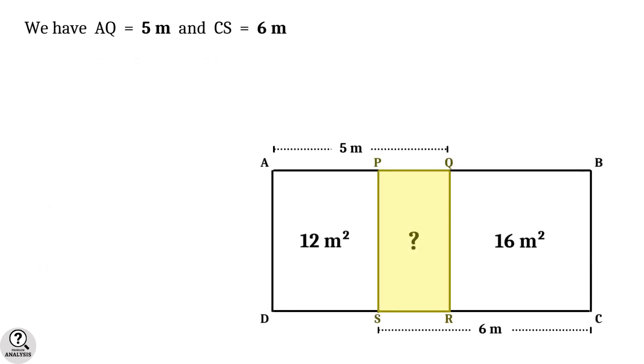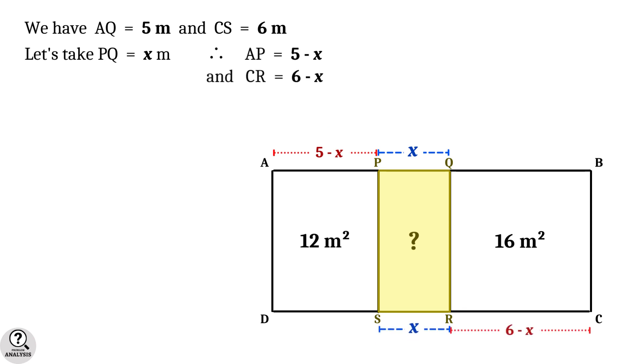For calculation, let's take the side PQ equal to x meters. Then we get the side AP equal to 5 minus x meters and the side CR equal to 6 minus x meters. But still we don't have any idea about the height of the rectangles, so let's take BC equal to y meters and thus AD also equal to y meters.